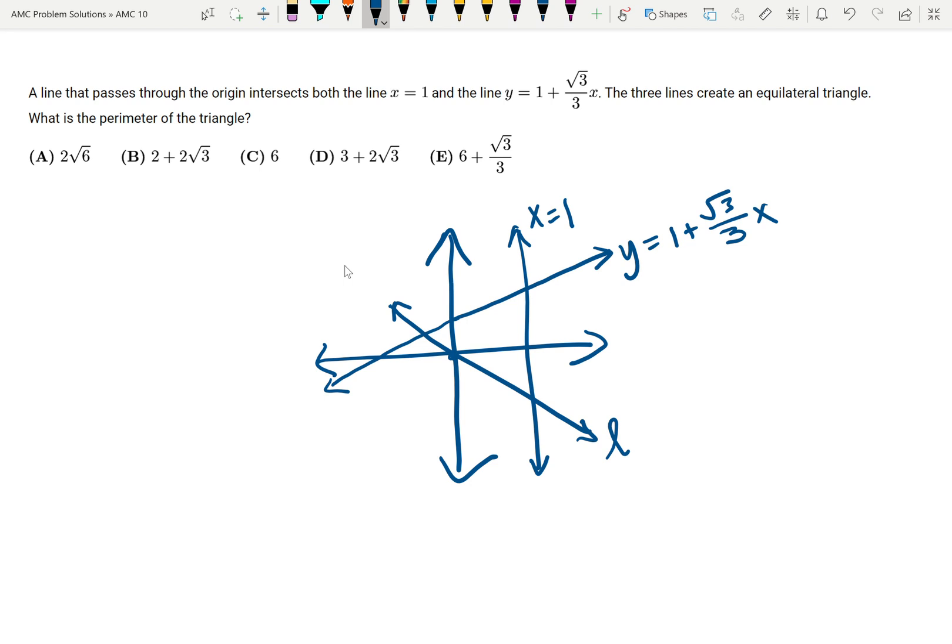We know this point from that line is the point (1, 1 plus root 3 over 3), just by plugging in 1 for x to this equation. And then we know that this is a right angle; we know this is the point (1, 0). So then we know that the length of this top part is just the y coordinate: 1 plus root 3 over 3. Now we need to find the length of this bottom part.